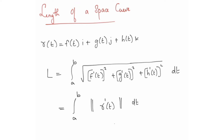We identify f, g, and h, then take the square of each first derivative, add them under a square root, and integrate from a to b. This simplifies to the formula: L = integral from a to b of the norm of r'(t) dt. That's the same thing.